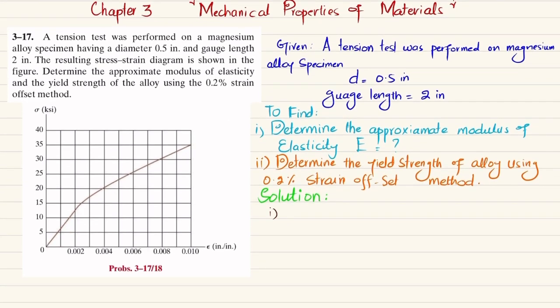We will first find the modulus of elasticity. The modulus of elasticity E can be found using the stress-strain curve. The slope of the initial linear portion gives the modulus of elasticity. Taking a point on the curve at the proportional limit: stress equals 13 ksi and the corresponding strain is 0.002.